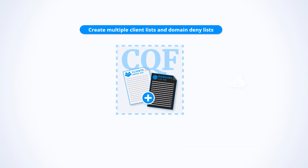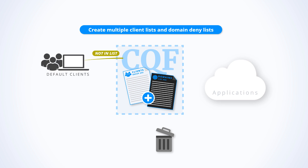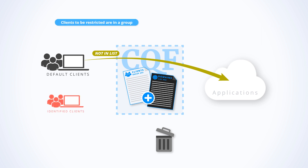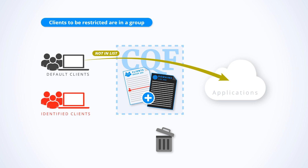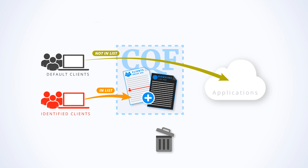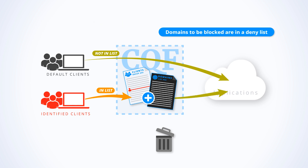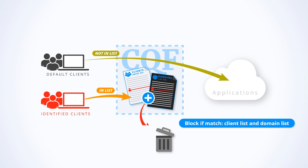In this first use case, we want to apply a filtering policy to a specific group of clients. The default group of users is allowed to access any application, but the list of red clients should not be allowed access to specific listed applications. A DNS request from a red client is analyzed — if the requested application is not in the list, the traffic is authorized. Requests to applications in the domain list are blocked.